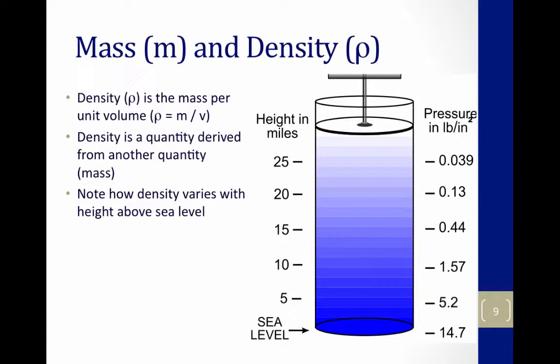Mass and density. Density is the mass per unit volume. Density is a derived quantity from mass divided by volume. And you can see in this picture how density varies with height above sea level.